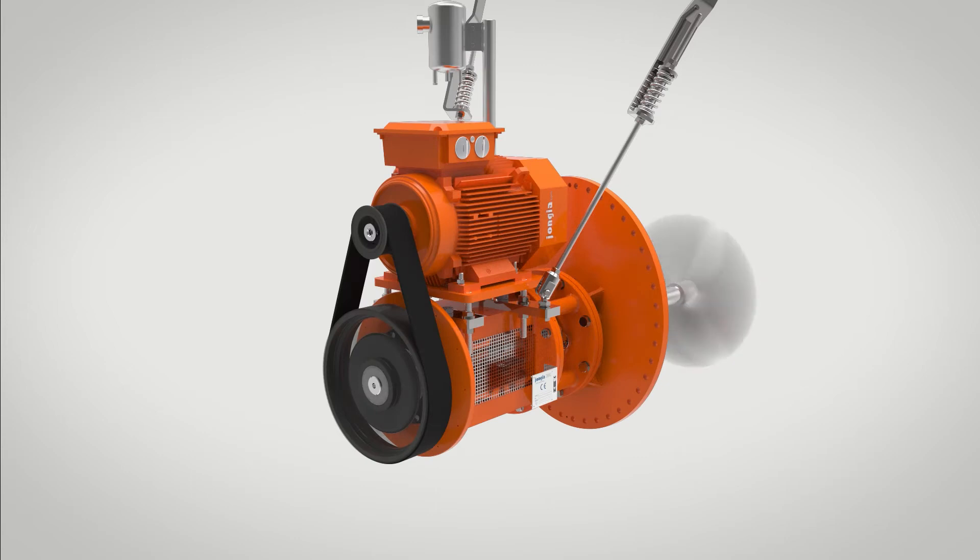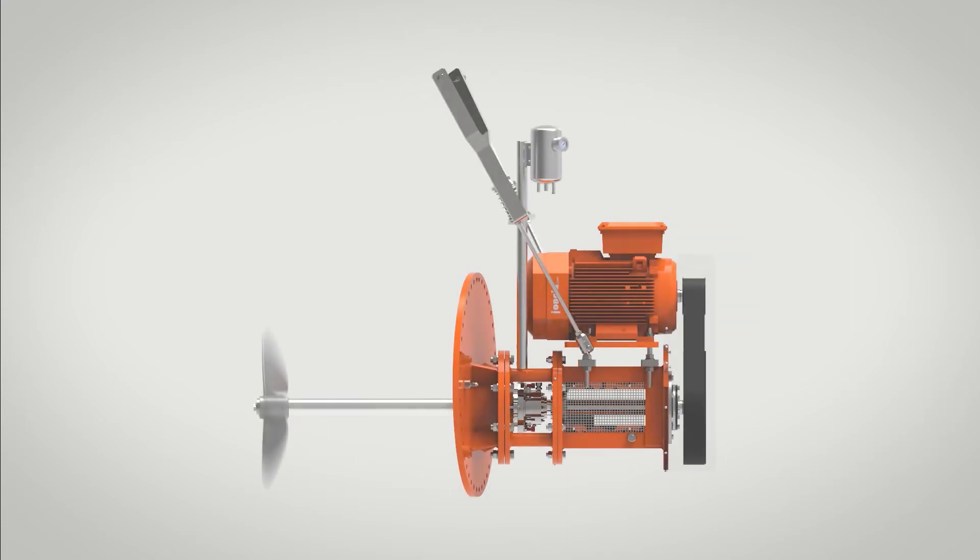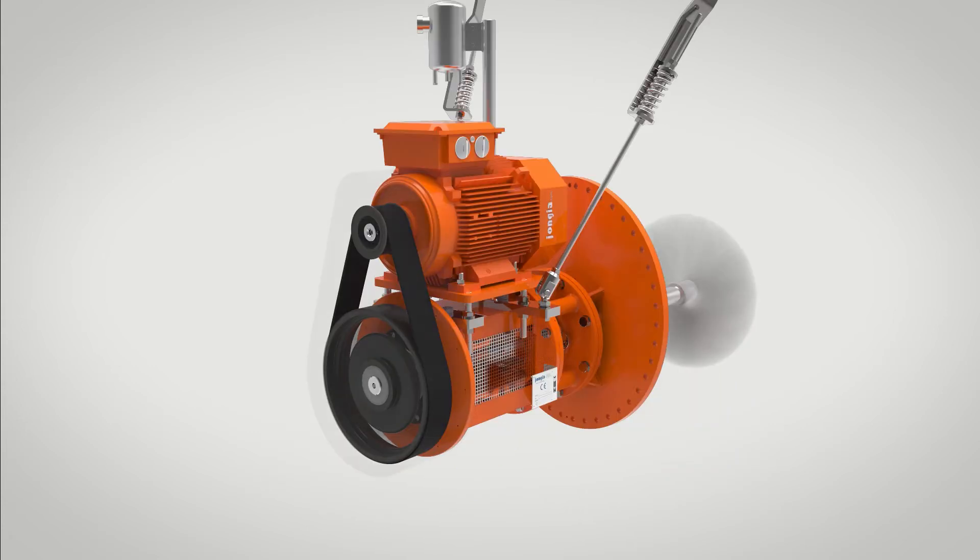A tooth belt ensures maximum transmission of power between the electromotor and shaft. With its 100% polycarbonate belt drive cover, the construction is certified according to ATEX Zone 1 and 2. An optional V-belt is available.